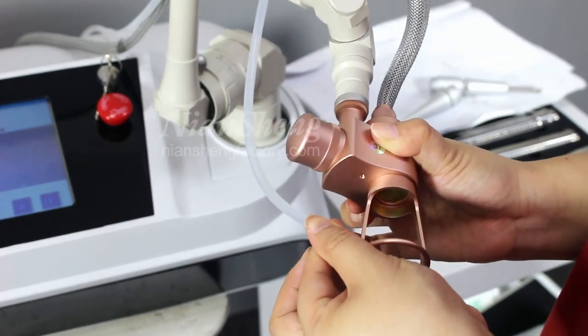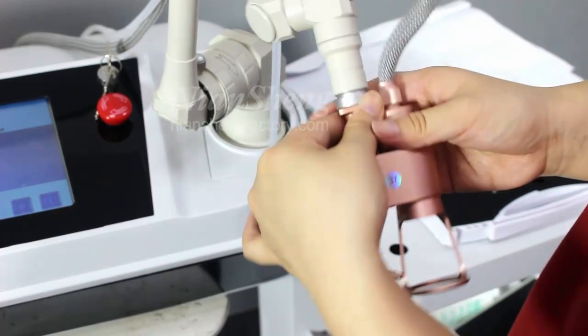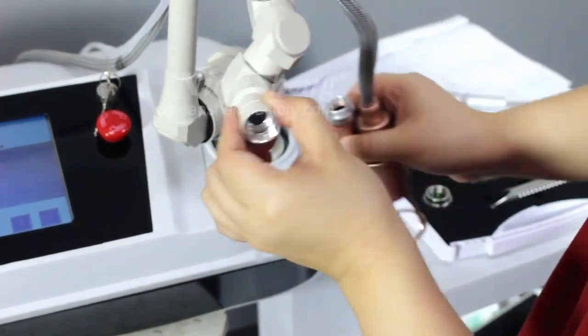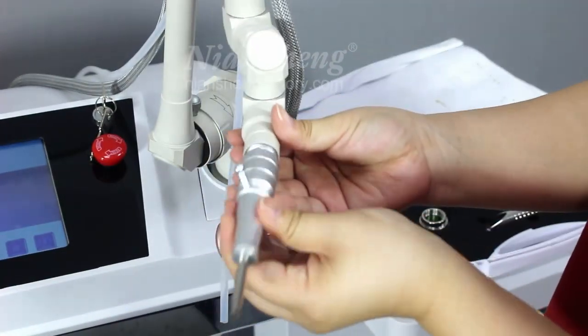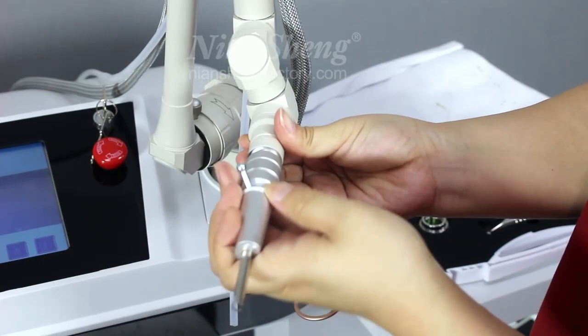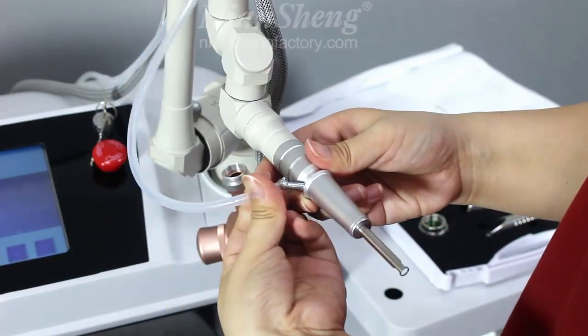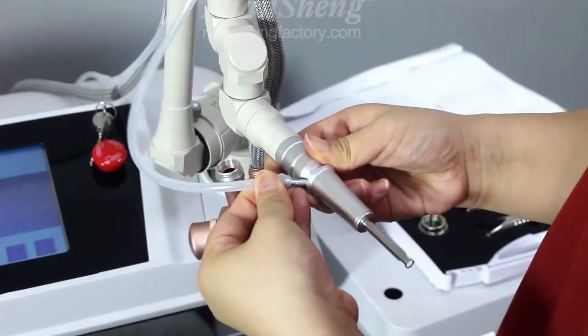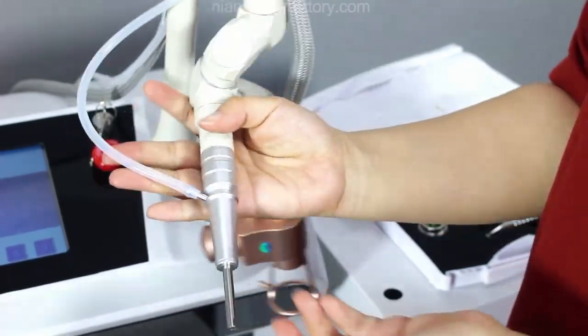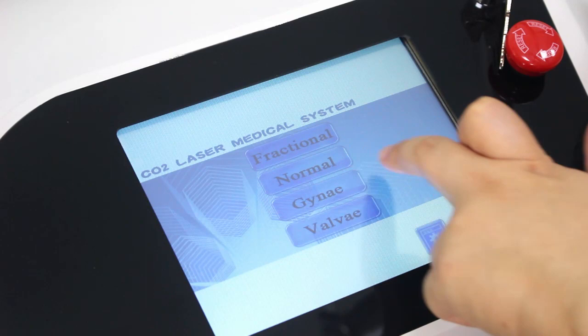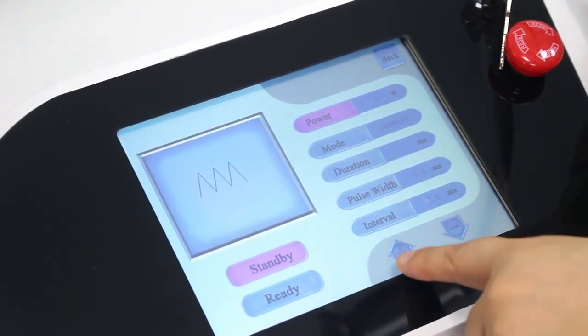We will turn on this one and then put the cutting tips inside the handpiece, put the line here. We enter the normal system to load the test. The power we can adjust here.